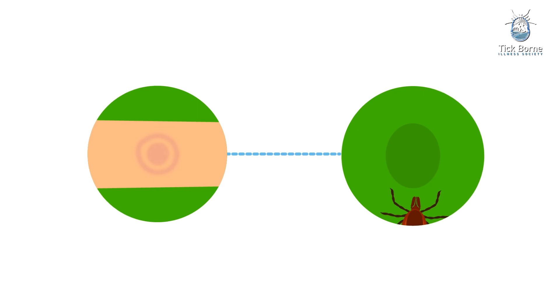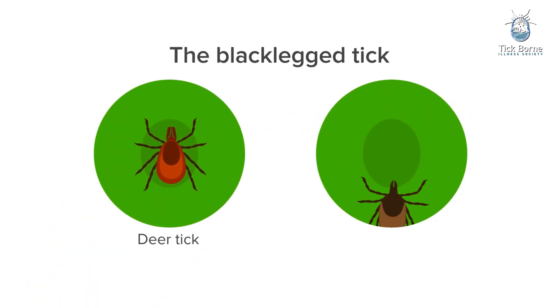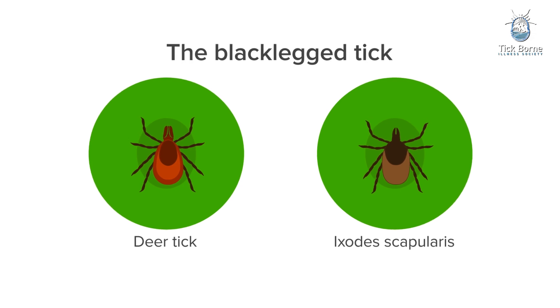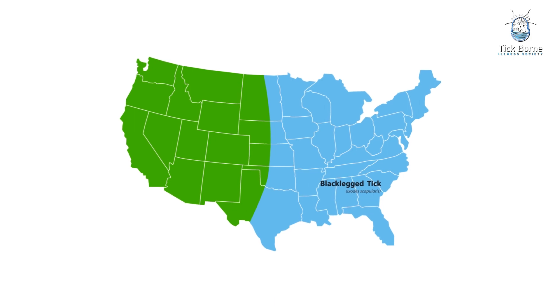Lyme disease is spread through the bite of infected ticks. The black-legged tick or deer tick, Ixodes scapularis, spreads the disease in the northeastern, mid-Atlantic, and north-central United States.